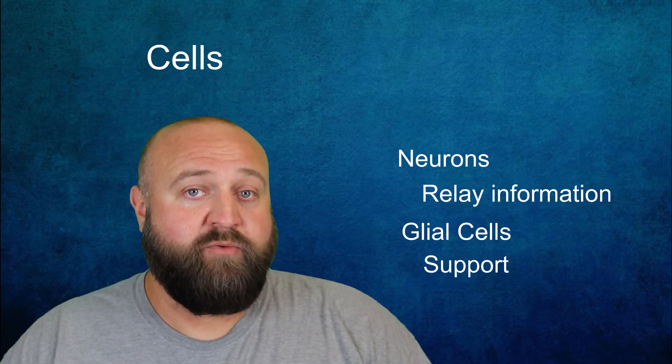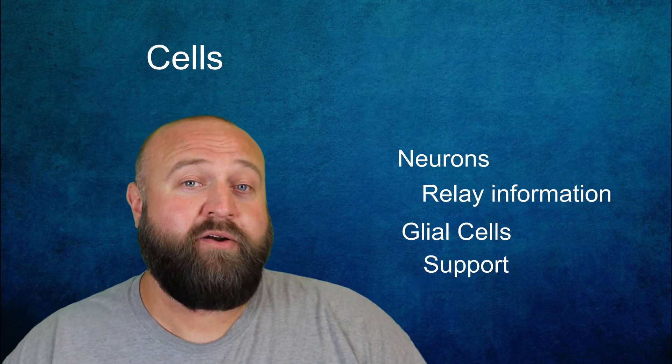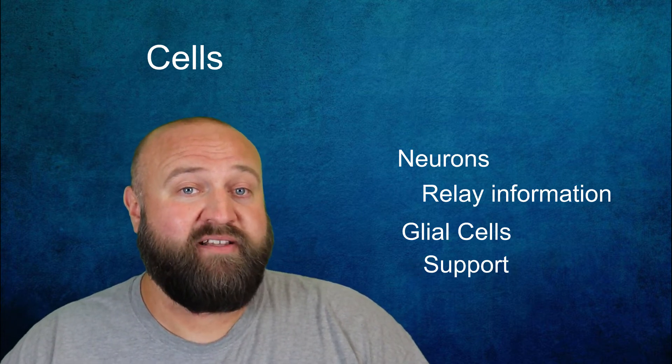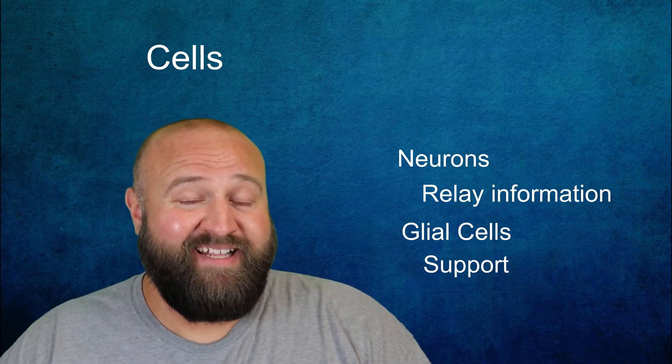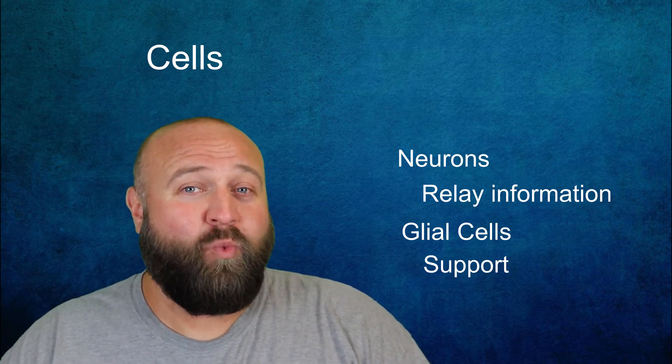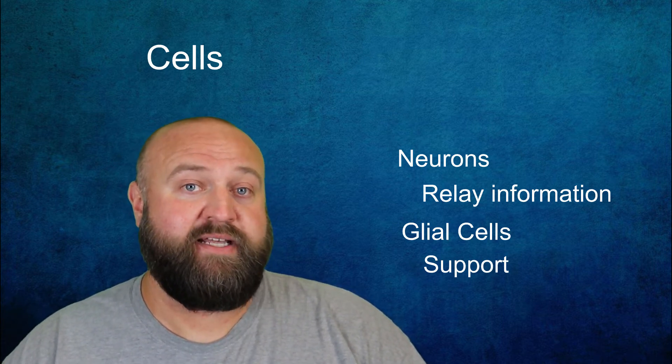Although you can hear different reports of the number, it's generally accepted that there are roughly 100 billion neurons and an equal number of glial cells throughout your nervous system. When you think about it, that's really amazing. That just one part of your body, the nervous system, has nearly 200 billion cells in it.